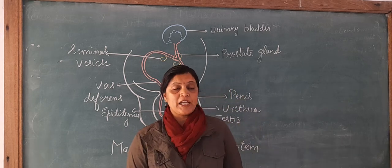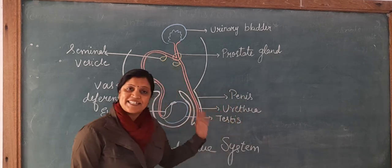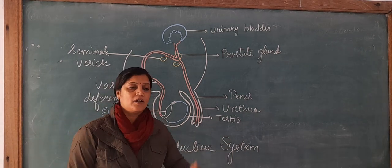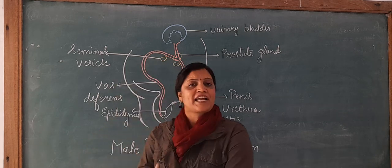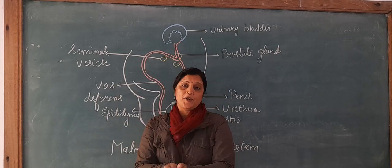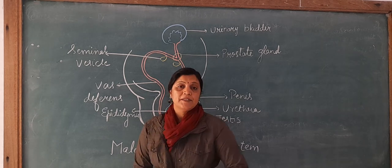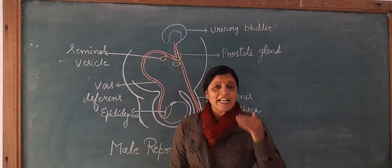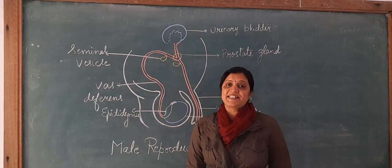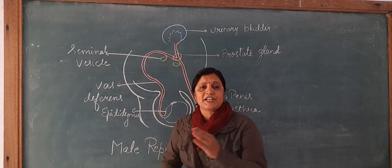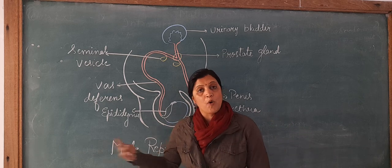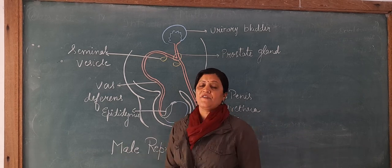At the age of puberty, the reproductive system gets developed and the secondary sexual characters also develop. Secondary sexual characters are the different traits we can see in adolescents or teenagers — in both boys and girls.